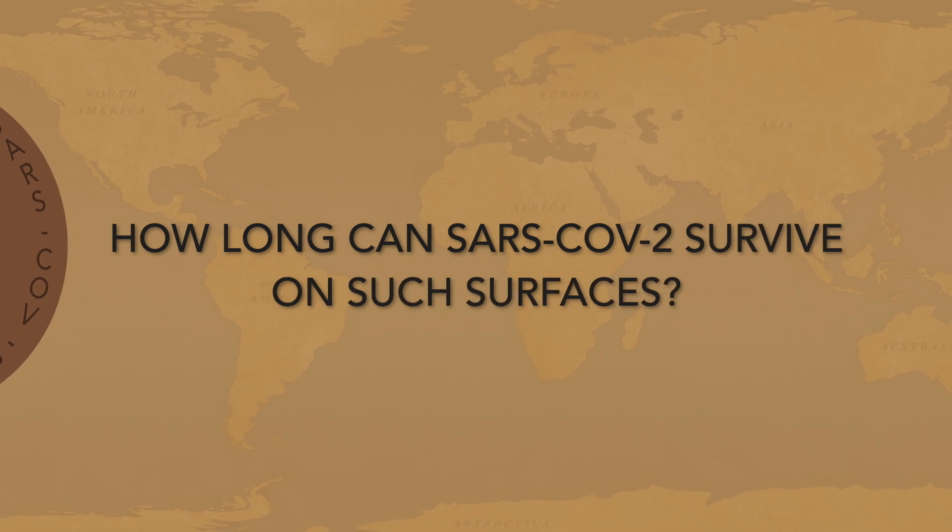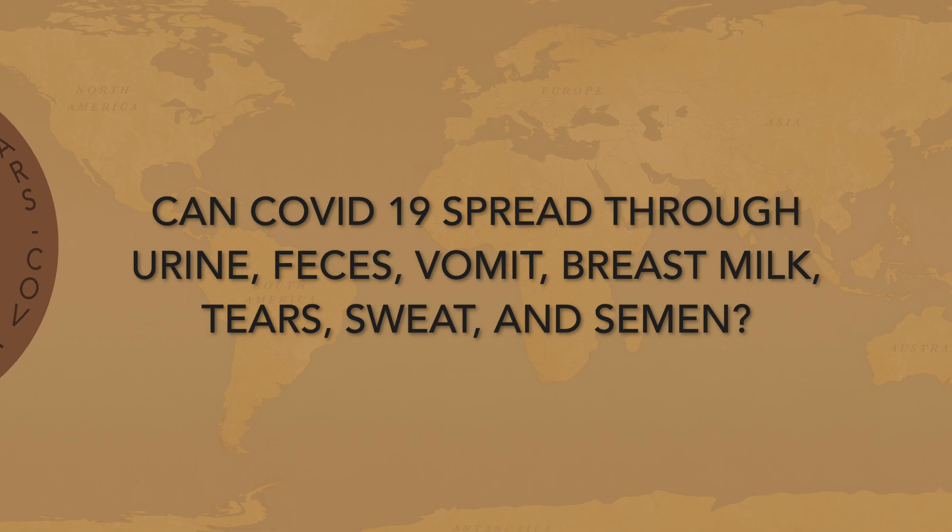The virus is spread by droplets produced in talking, coughing, and sneezing from an infected person. These droplets fall on surfaces like tables and floors, and others who touch those surfaces are prone to develop the disease. The virus can survive up to three days or 72 hours on such surfaces, depending on the surface. Currently there is not enough data to suggest it can spread through other sources.